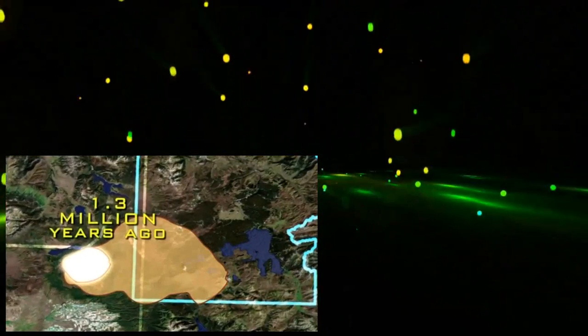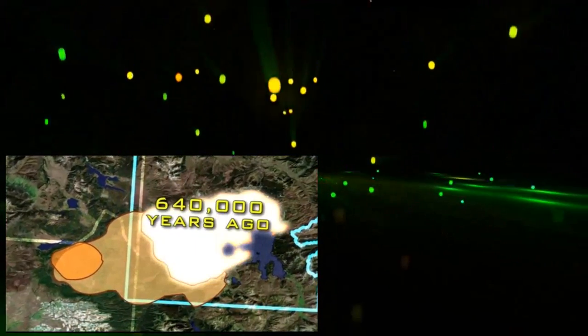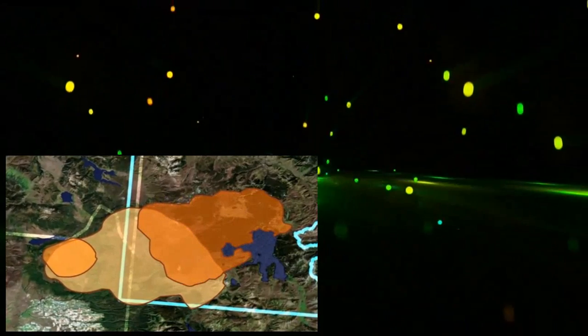This is only the last of three monstrous calderas formed over the past 2 million years. The volcanic history of Yellowstone is marked by three giant cataclysmic eruptions of a scale we haven't seen in the history of man.